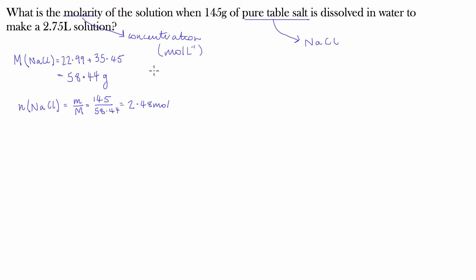Now, to work out the molarity or concentration, we'll let C stand for concentration. That's equal to number of moles of sodium chloride divided by the volume which we're dissolving it in. Now, volume has to be in litres. So that's going to equal 2.48 moles divided by the volume, which is 2.75.